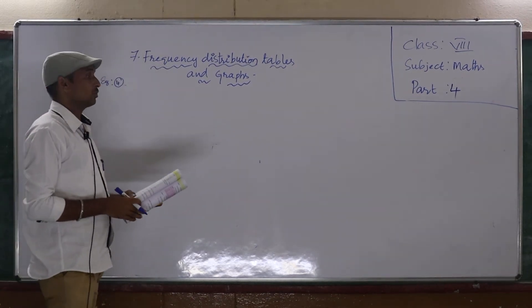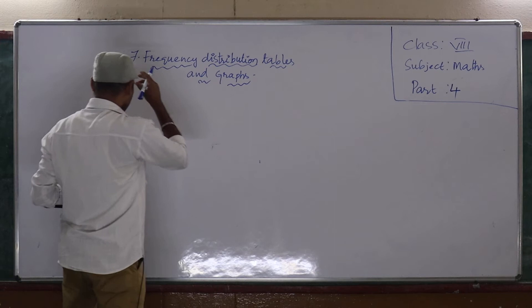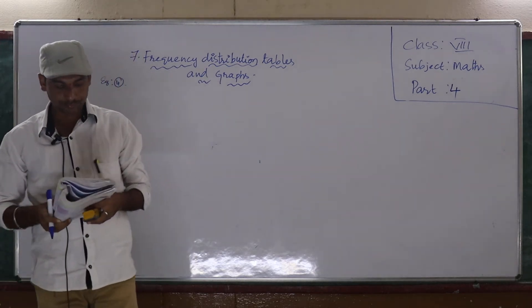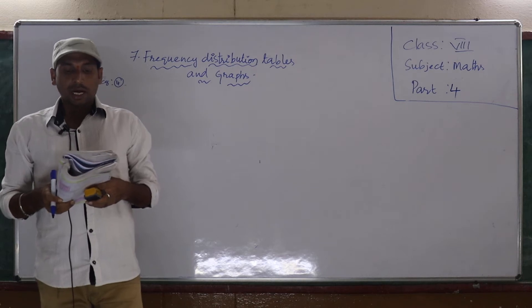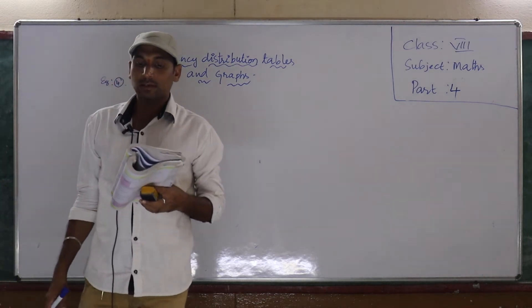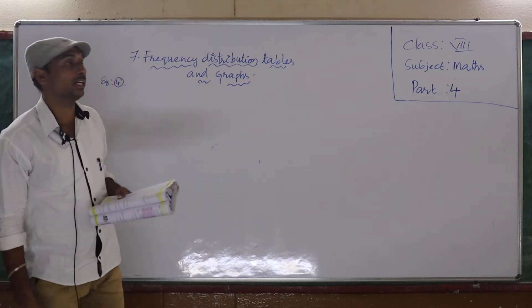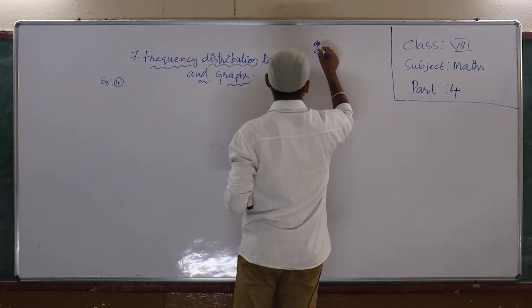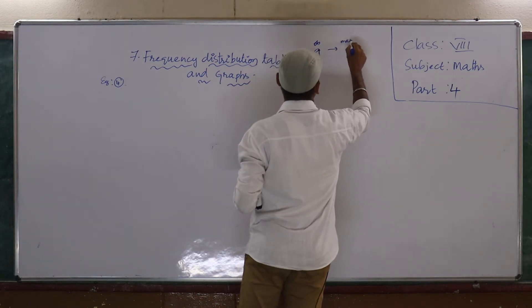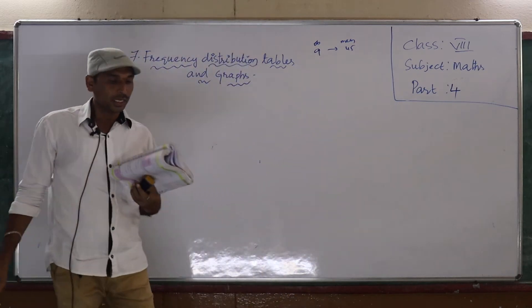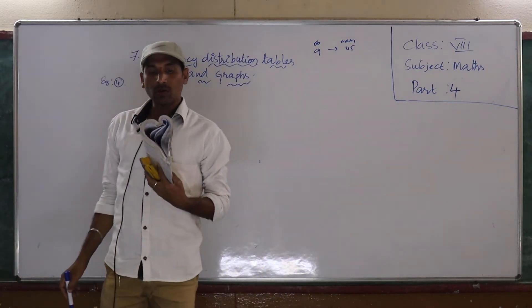Okay, children. So next, let us discuss the fourth example. See, once I am going to read, arithmetic mean of 9 observations was calculated as 45. In doing so,